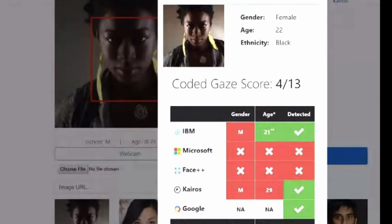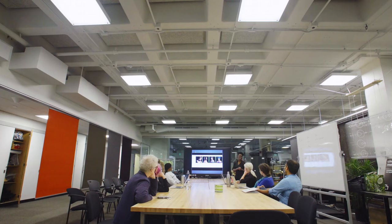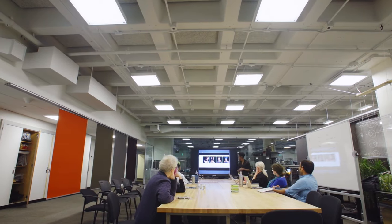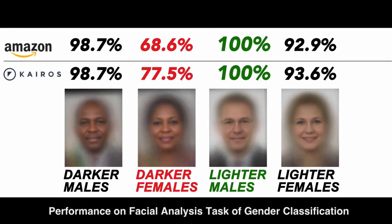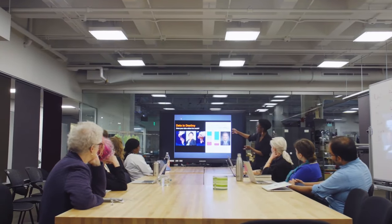So I looked at IBM, Microsoft, Face++, Google. It turned out these algorithms perform better on male faces than female faces. They perform significantly better on lighter faces than darker faces. If you're thinking about data and artificial intelligence, in many ways data is destiny. Data is what we use to teach machines how to learn different kinds of patterns. If you have largely skewed data sets being used to train these systems, you can also have skewed results. AI is forward-looking, but AI is based on data, and data is a reflection of our history. So the past dwells within our algorithms.